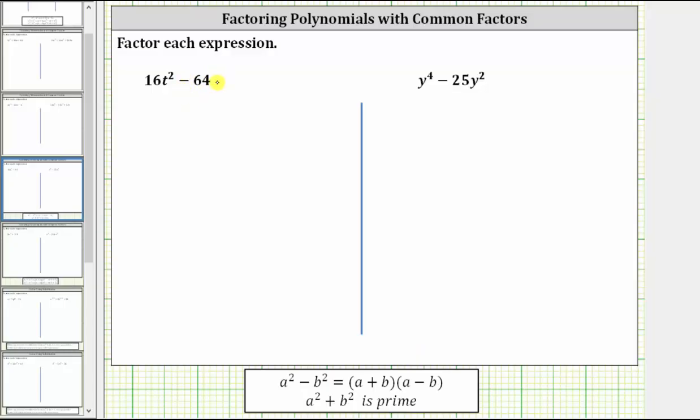And the greatest common factor between 16t squared and 64 is 16. To help show this, we could write 16t squared as 16 times t squared, and we could write 64 as 16 times four. This is optional, but it does allow us to see the greatest common factor as well as the remaining factors of each term after we factor out 16.